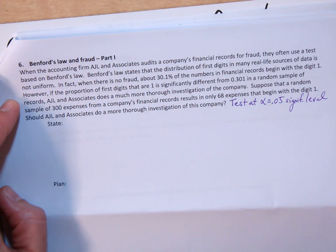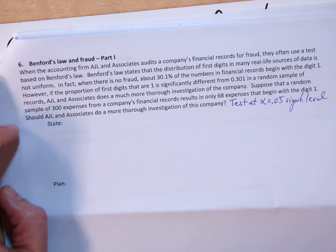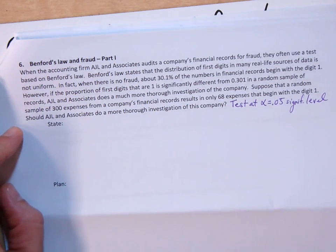However, if the proportion of first digits that are 1 is significantly different from 0.301 in a random sample of records, AJL and Associates does a much more thorough investigation of the company. Suppose that a random sample of 300 expenses from a company's financial records result in only 68 expenses that begin with the digit 1. Should AJL and Associates do a more thorough investigation of this company? Test at an alpha 5% significance level.